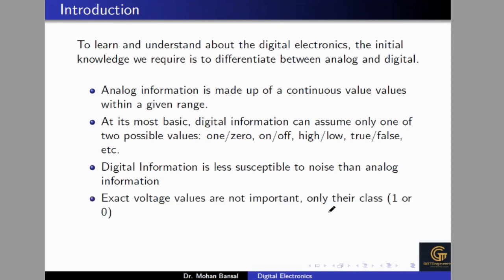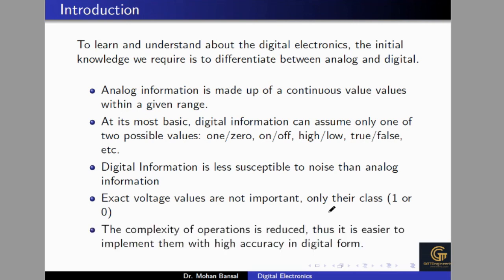Exact voltage values are not important in digital, but their class — whether high or low — is very important. The complexity of operation is reduced because we have a limited number of output amplitude levels: only one and zero. But in analog signals we have an infinite number of amplitude levels. This gives high accuracy at the digital level. So this is the basic introduction, and we saw what the advantages of digital devices are compared to analog devices.